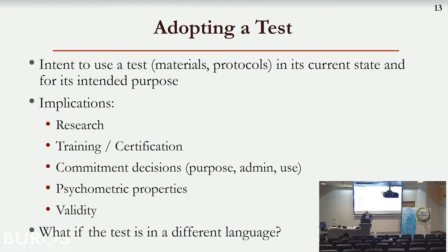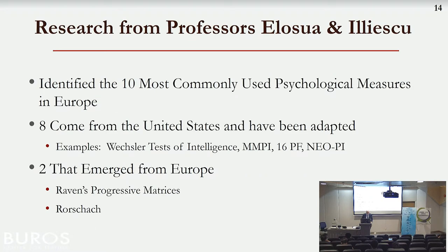If you're going to adopt a test, you have to decide for what purpose, look at implications for research, consider whether you have the training to administer it, what the psychometric properties including validity are, and whether it's already available in another language. For example, when the Minnesota Multiphasic Personality Inventory was brought to China, there were four or five language versions. Fanny Chung's version is the one that's now lasted, but she also developed the Chinese Personality Inventory.